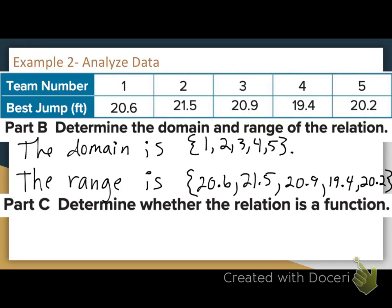Part C — determine whether the relation is a function. How do I know? No repeating x values. Are the x values in my domain or range? Domain. Do you see any repeating x values? No. So this is a function — because there are no repeating x values, each member in my domain is paired with exactly one member in the range.